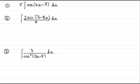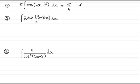Welcome back. With the first one, we put down the constant 5. The a value is 4, so it's 5 multiplied by 1 over 4, which is five-quarters. Then we have sin(4x − 7). Don't forget the constant of integration, plus c.